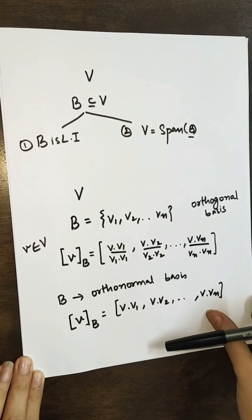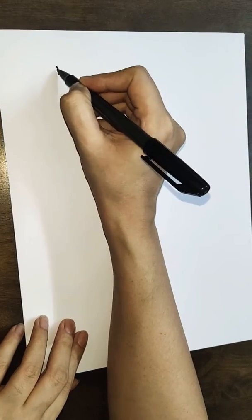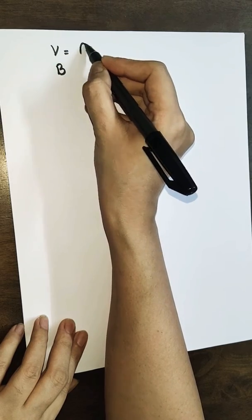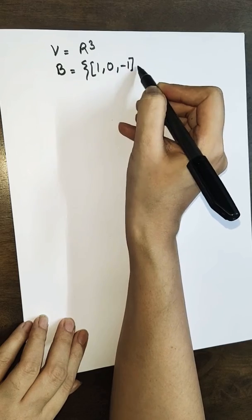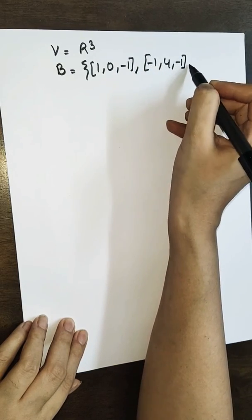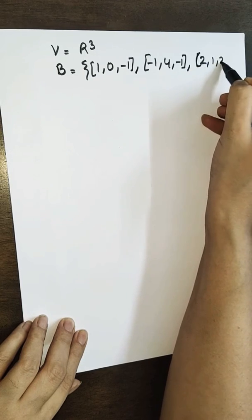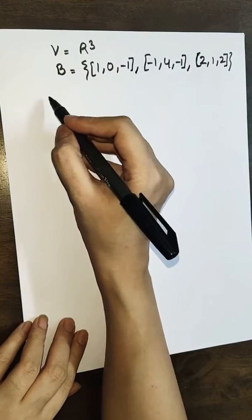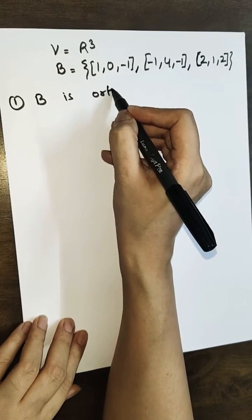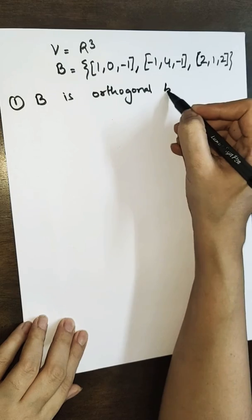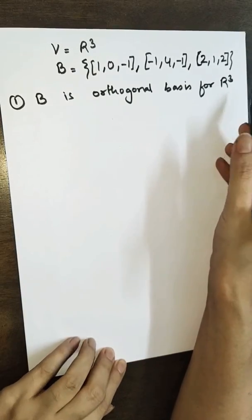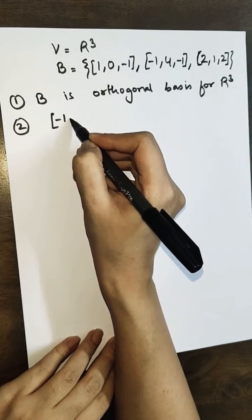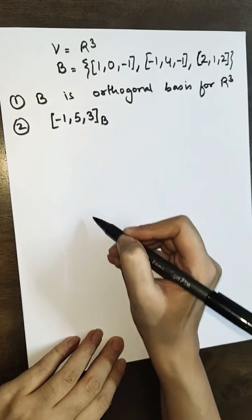Let us quickly take up an example to understand this. I am taking V to be R3, and B to be the vectors {(1, 0, -1), (-1, 4, -1), (2, 1, 2)}. Firstly, I will show that B is an orthogonal basis for R3, and after that I will find the coordinates of the vector (-1, 5, 3) with respect to this orthogonal basis.